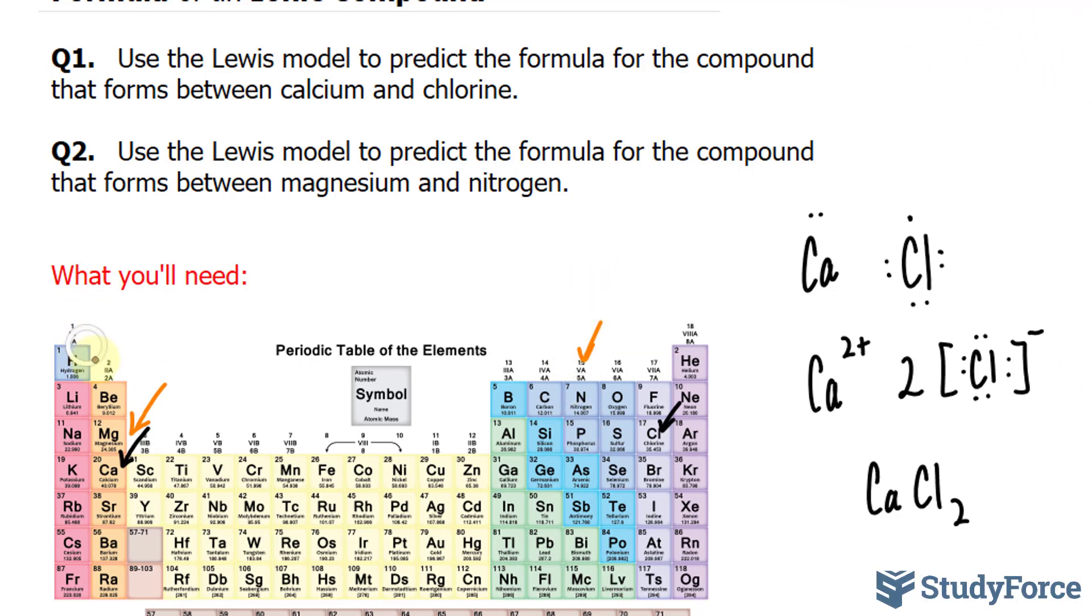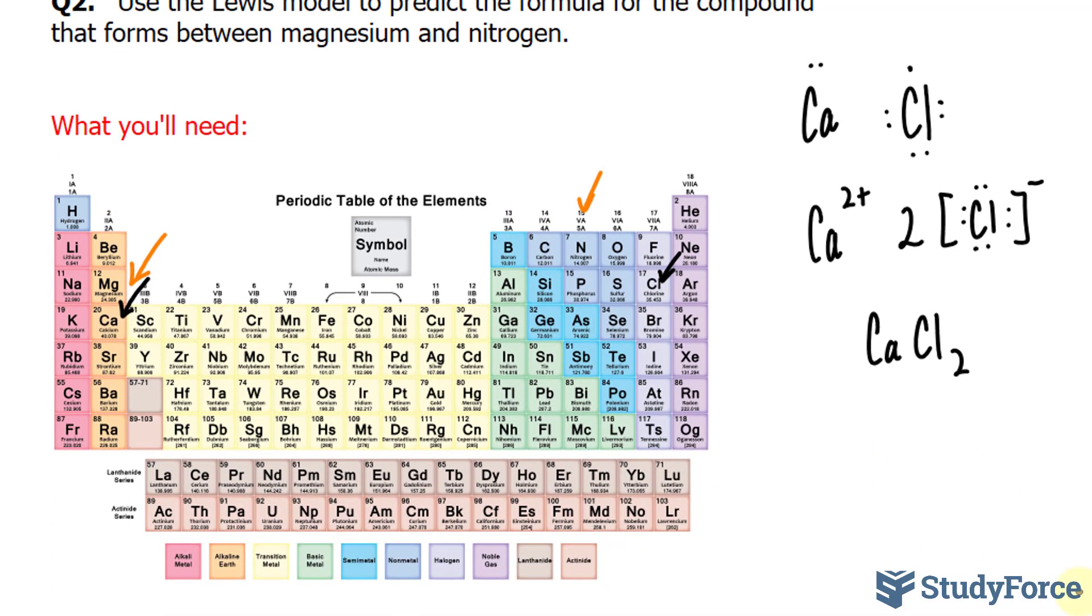So if you count one, two, three, four, five, that indicates how many valence electrons nitrogen has. So using the same scheme as before, we'll write down magnesium with two outer electrons, and nitrogen with one, two, three, four, five.